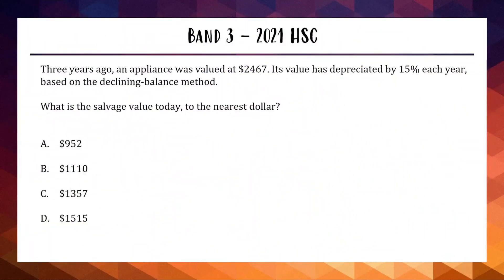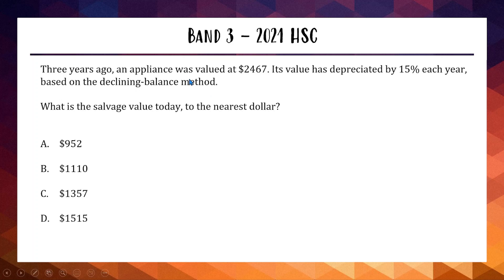Up first we have a Band 3 question from the 2021 HSC multiple choice. We've got an appliance valued at $2,467 depreciating 15% each year based on the declining balance method. There are two types of depreciation in this course: one is simple interest in reverse, and the other is compound interest in reverse, which is the declining balance method.